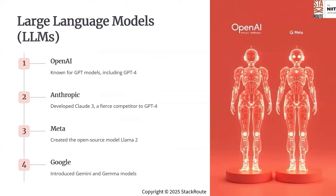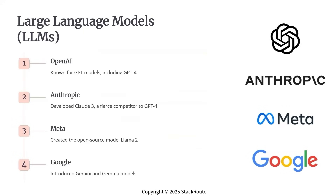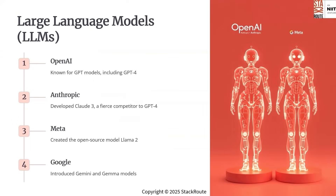Let us zoom into large language models, or LLMs. Companies like OpenAI, Google, Meta and Anthropic are in a fierce race to develop the best LLMs. OpenAI's GPT-4, Meta's Llama-2 and Llama-3, Google's Gemini and Anthropic's Claude are some of the leading models.